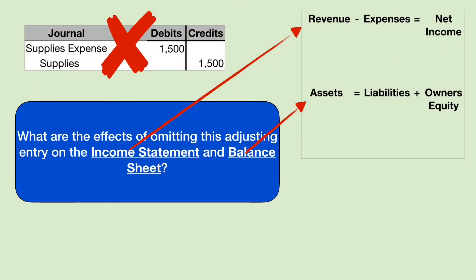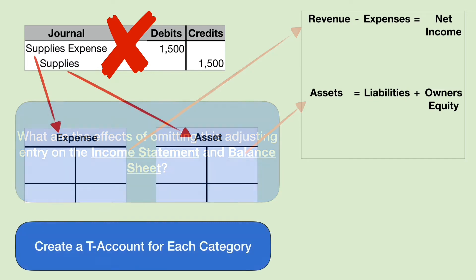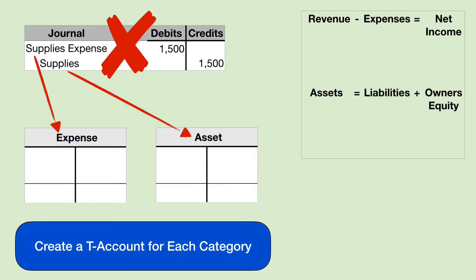Here we have the year-end adjustment for supplies, wherein we're supposed to have debited supplies expense and credited supplies, but we neglected to do it. We're going to consider what the effects will be on the income statement and the balance sheet. We are missing a debit to supplies expense, so I'm going to create a T-account for the category expense. And we're missing a credit to the supplies account, which is an asset, so I'm going to make a T-account for the asset category.